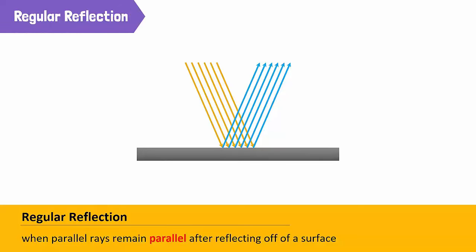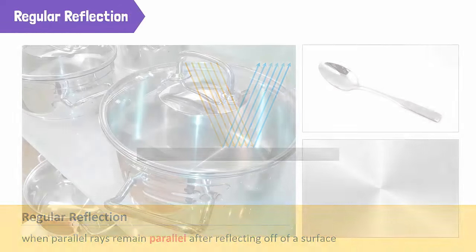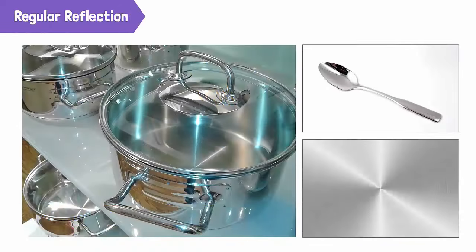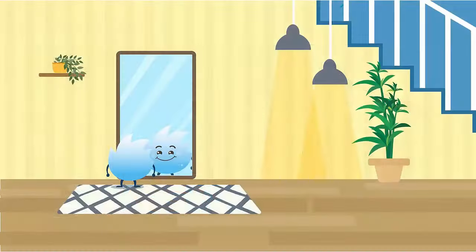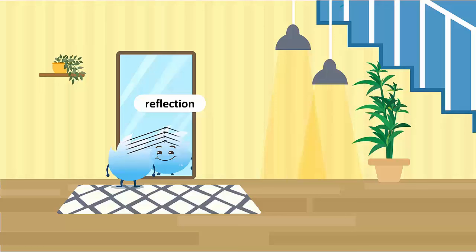Regular reflection takes place when light falls onto a smooth, shiny or polished surface. For instance, regular reflection can occur in a mirror. Since reflected rays travel in specific directions, we can see images with our eyes.